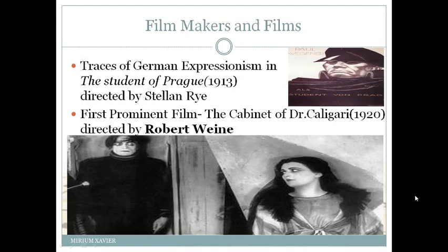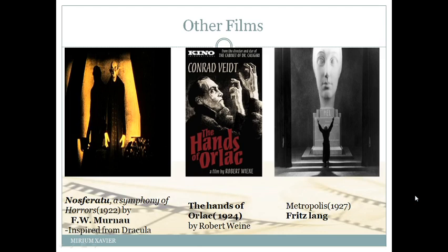The traces of German Expressionism were first seen in the film 'The Student of Prague,' which came out in 1913, directed by Stellan Rye. The first prominent film is 'The Cabinet of Dr. Caligari,' which came out in 1920, directed by Robert Wiene. Other important films include Nosferatu: A Symphony of Horrors by F.W. Murnau, inspired by Dracula; The Hands of Orlac by Robert Wiene; and Metropolis by Fritz Lang.